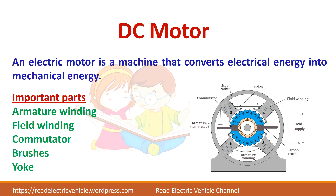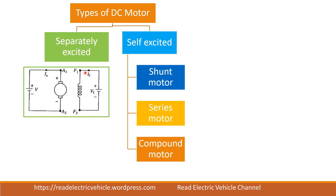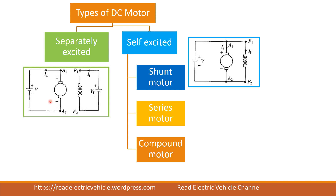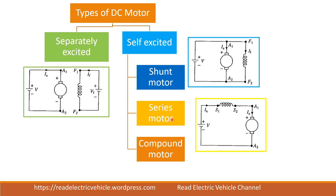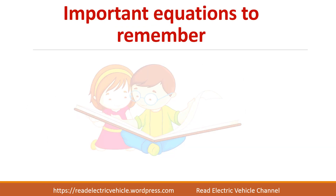If the field winding is connected separately or given a separate DC supply, we call it a separately excited DC motor. In a self-excited DC motor, the field winding is supplied from the armature itself. If the field winding is connected in parallel with the armature, it is called a shunt motor. In a series motor, the field winding is connected in series with the armature. In a compound motor, one winding is in parallel and another in series with the armature.